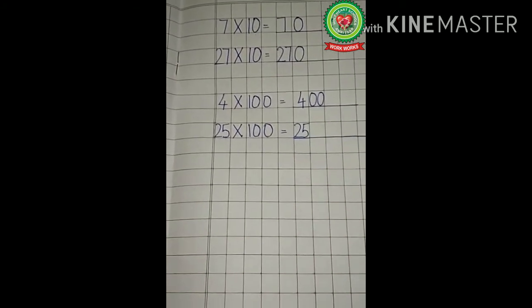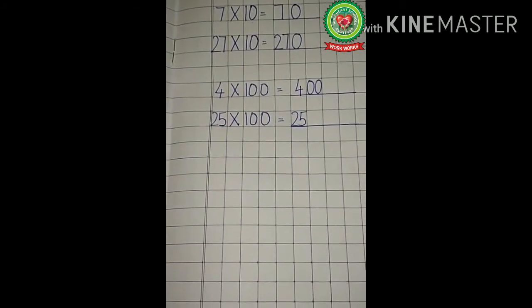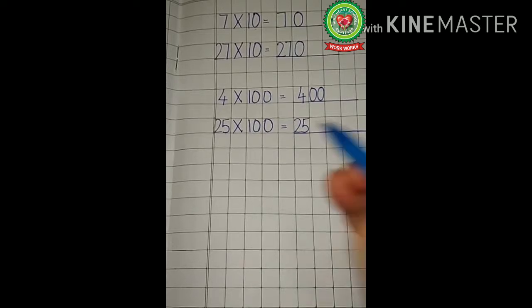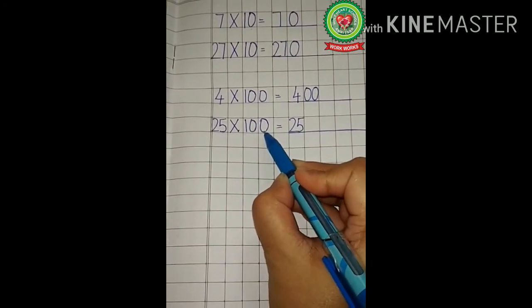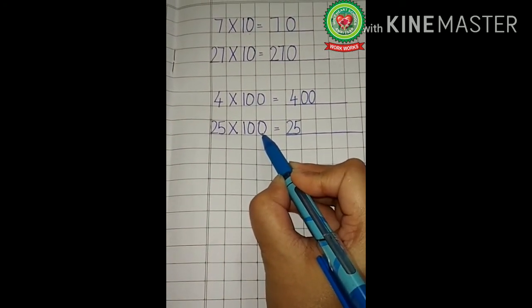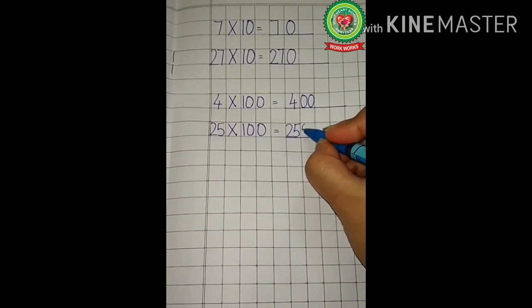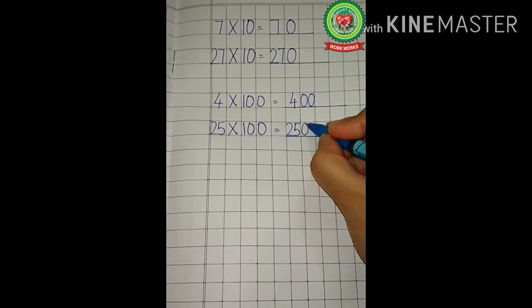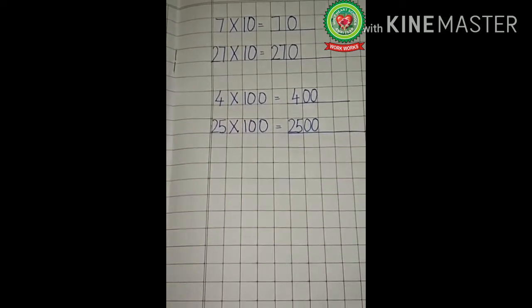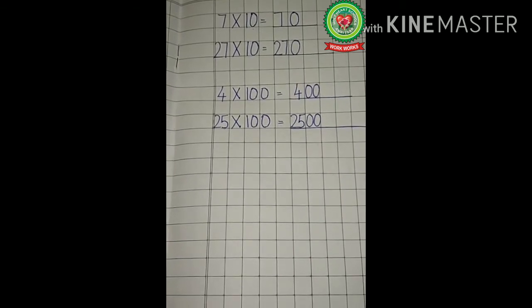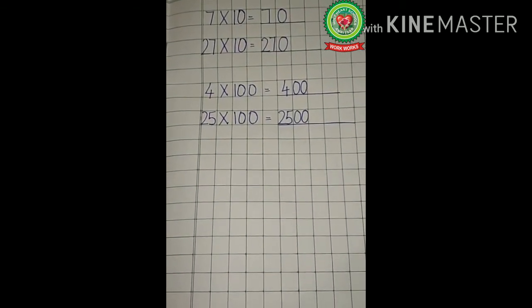Now after moving the finger, how many zeros can you see? Count the zeros: 1, 2. So we will write two zeros after 5. So 25 multiplied by 100 is 2500.